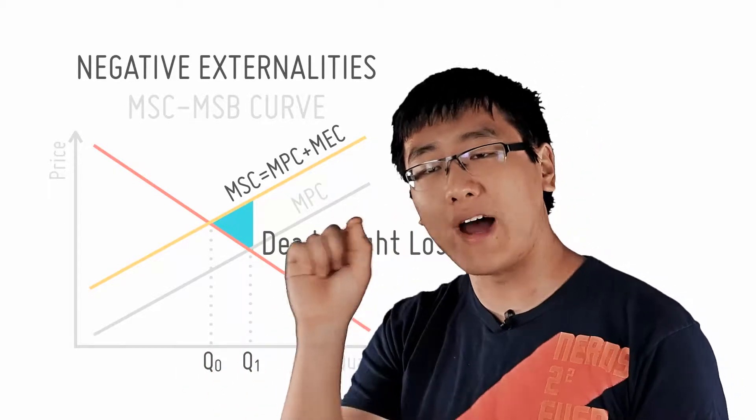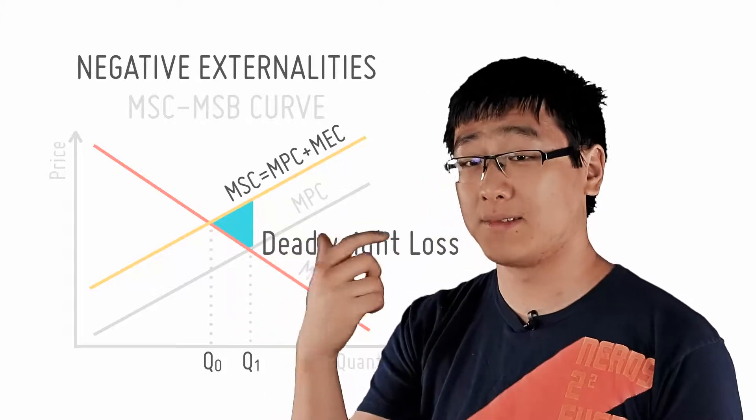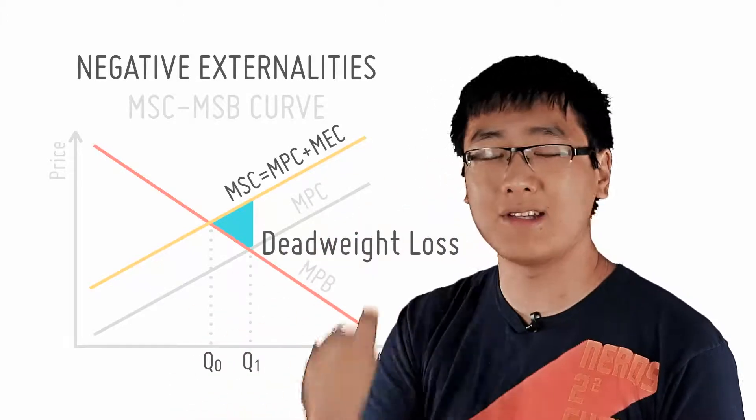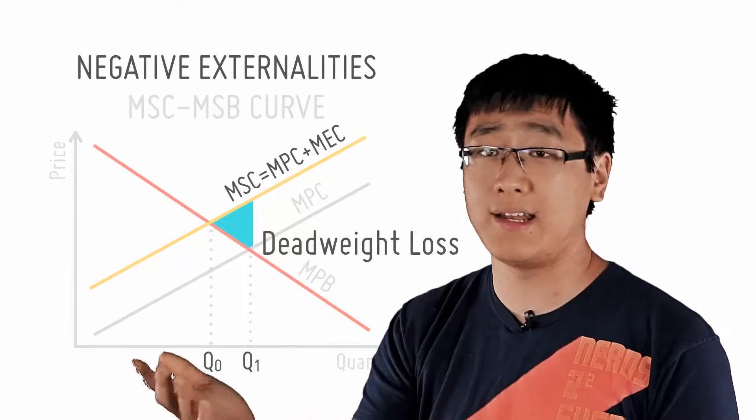It is this little triangle that points towards the socially optimum area. Remember it always points at the socially optimum area. This is a shortcut that you should remember.